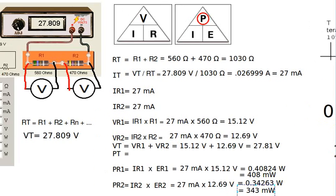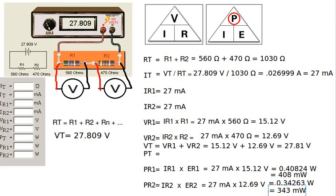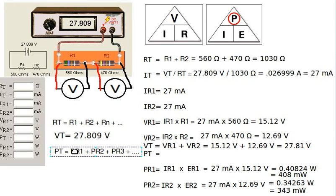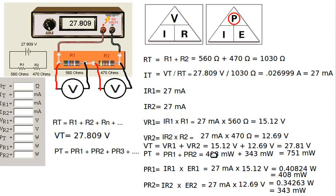To find the total power, we can simply add the individual powers together — this applies to any circuit, not just series circuits. Power of R1 plus power of R2 is 408 milliwatts plus 343 milliwatts, giving us 751 milliwatts total. We have now calculated all the resistances, currents, voltages, and powers in the circuit.